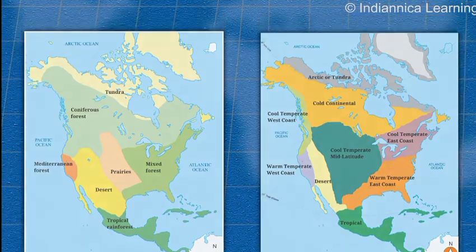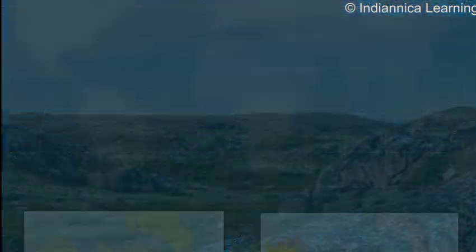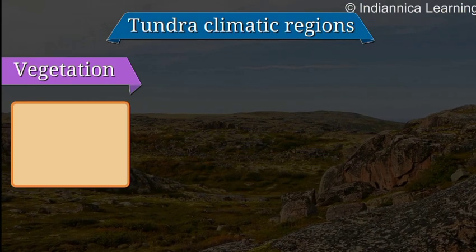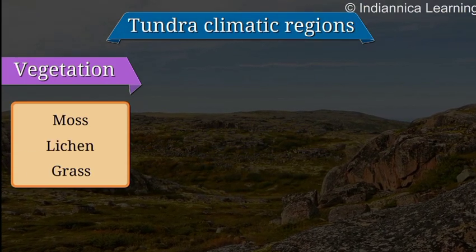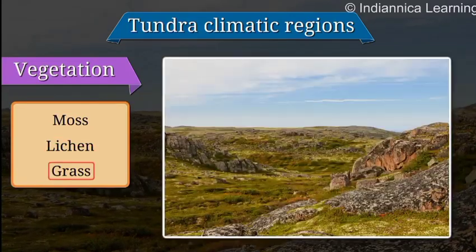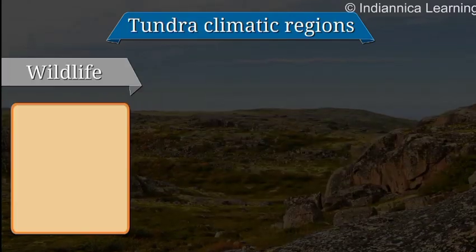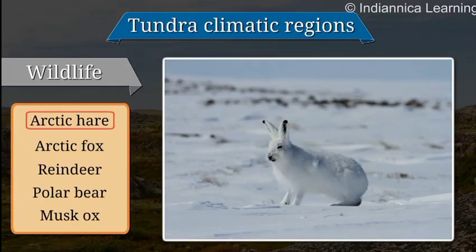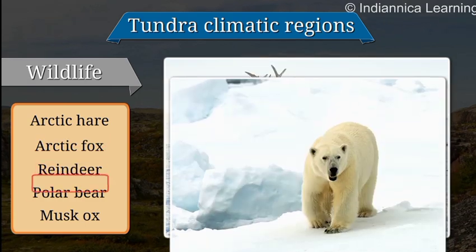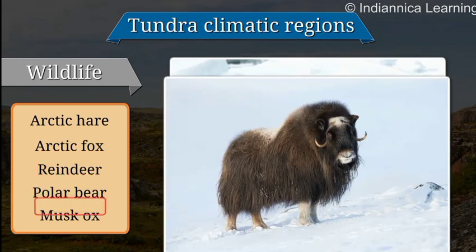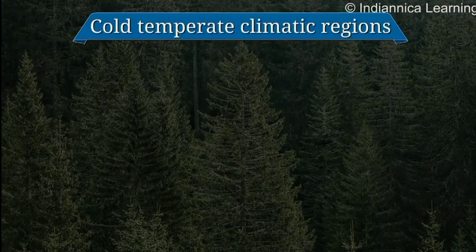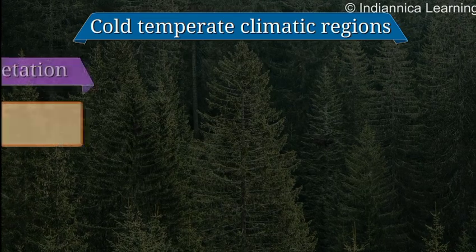Tundra: The regions with the tundra type of climate consist of moss, lichen, and grass. The wildlife here consists of the Arctic hare, Arctic fox, reindeer, polar bear, and musk ox.